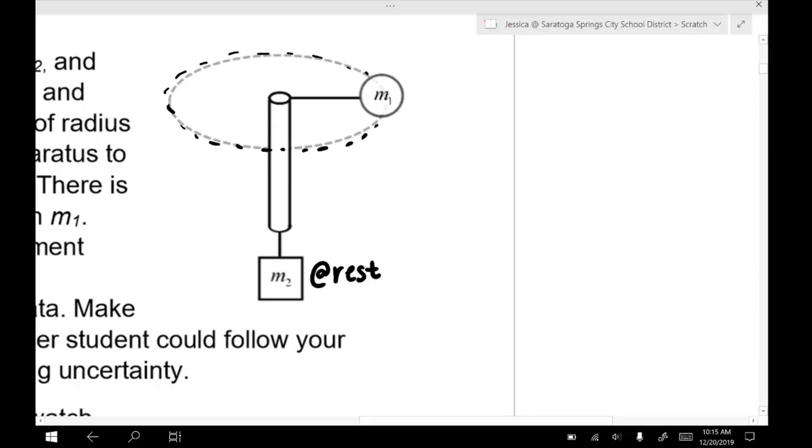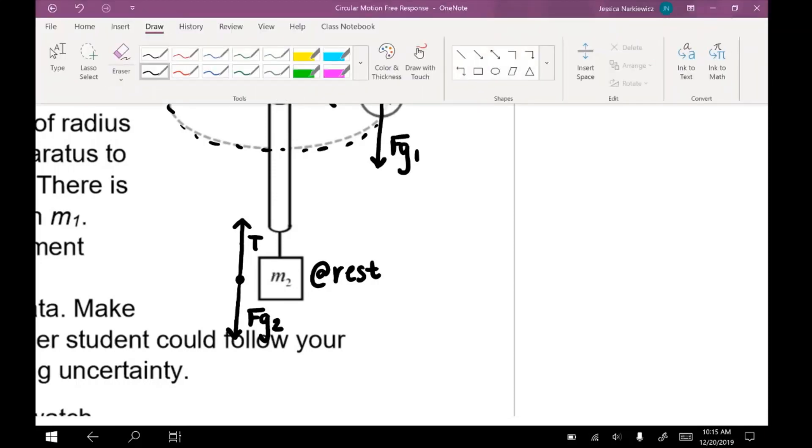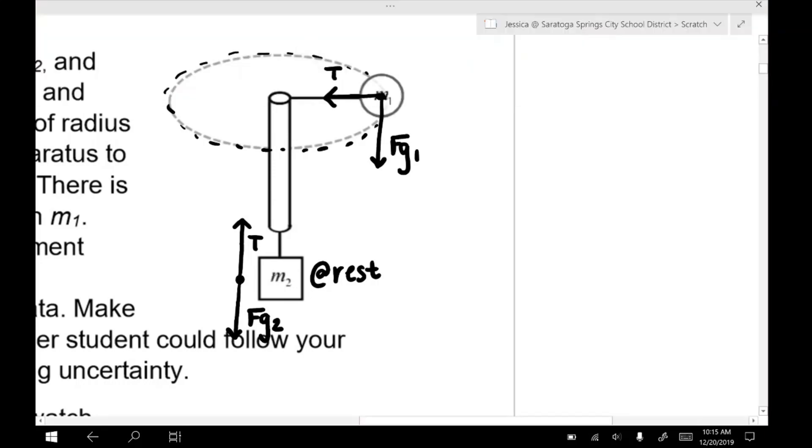So as with most problems, we want to start with the free body diagram. So M1 has a tension acting on it and a force of gravity. And now just like we did with Atwood's machines, the two tensions, because it is the same string, are going to be equal.